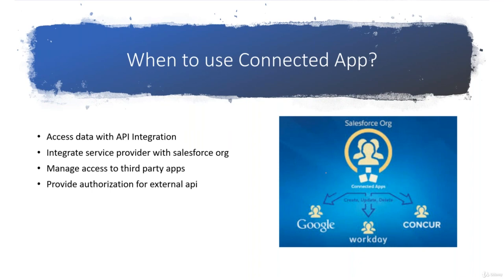Whenever you want your data to be accessible with API integration, you can use Connected App. You have to use Connected App to request access to Salesforce data on behalf of some external applications. The first use case: access data with API integration — you have to make a Connected App which is going to request access, and that Connected App must be integrated with the Salesforce API using some OAuth mechanism.